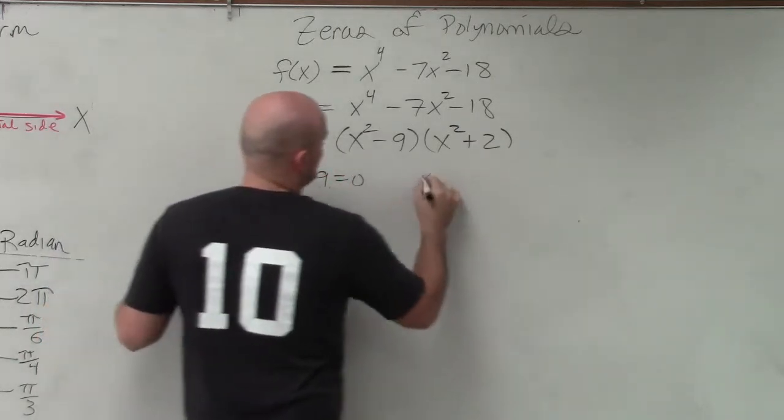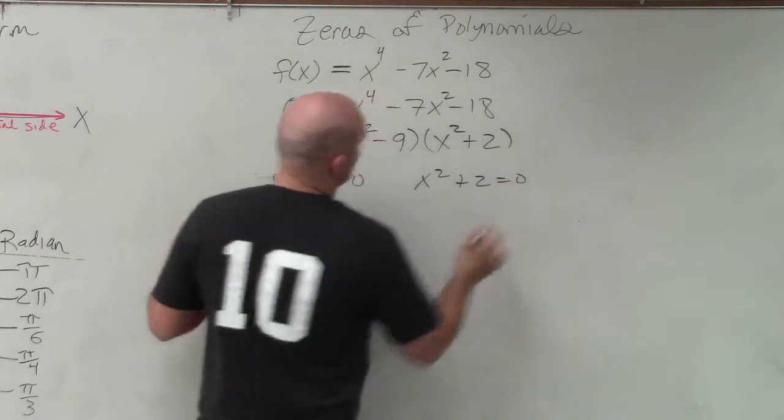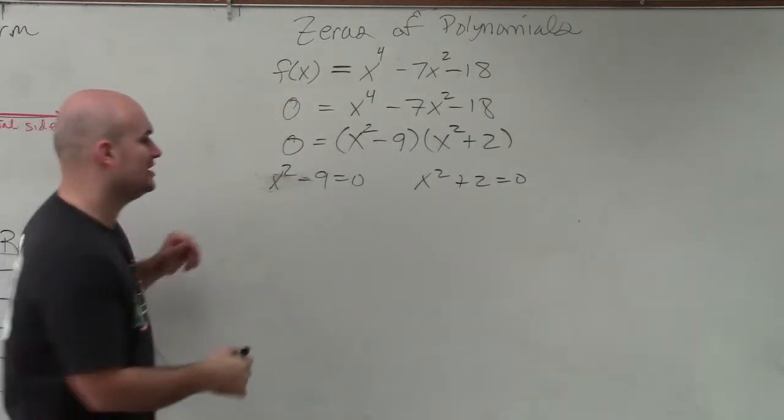x squared minus 9 equals 0. x squared plus 2 equals 0. Now we just go ahead and solve.